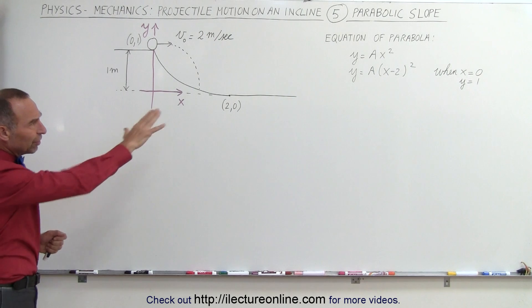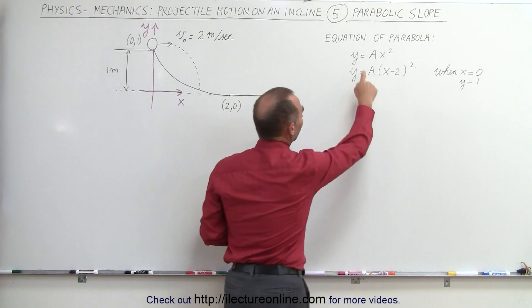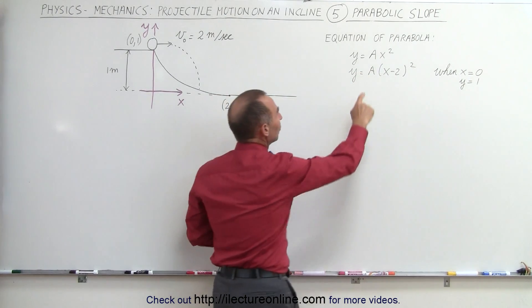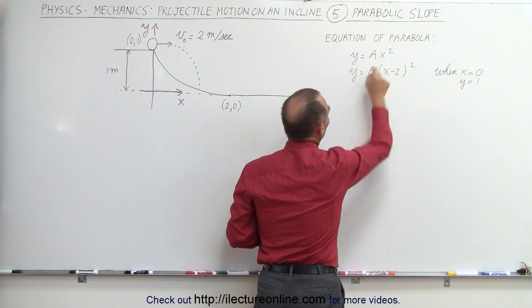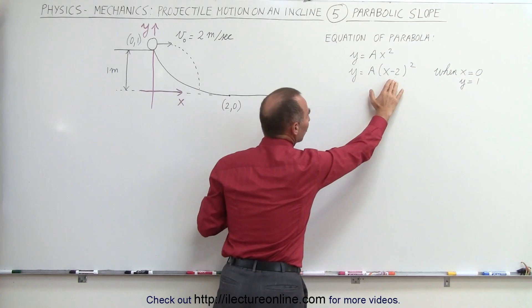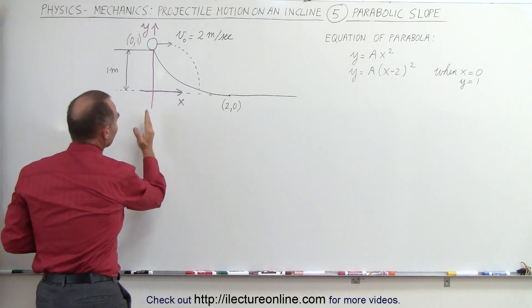First of all, let's finish what we started over there with the equation of the parabola. A general equation of a parabola where the vertex is at the origin is going to be y equals ax squared. But if it's moved to the right or to the left, then we have to add or subtract the constant term inside the parentheses there.